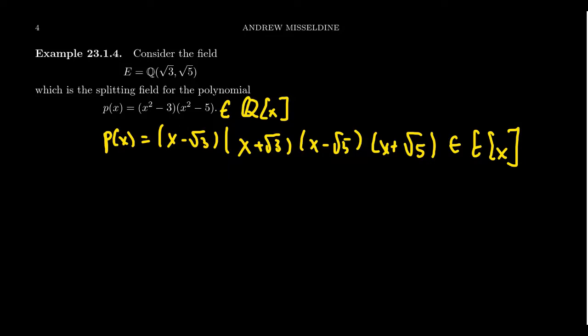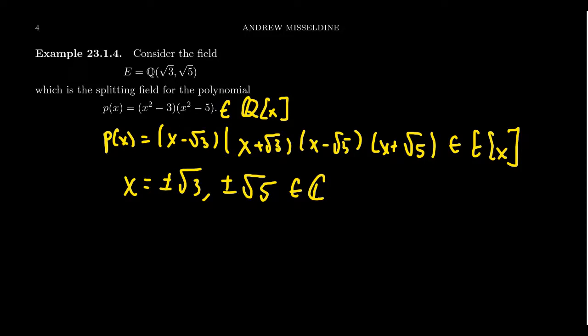We get four possible roots: plus or minus √3 and plus or minus √5. If you view these as complex numbers, the complex field is algebraically closed by the Fundamental Theorem of Algebra, so every rational polynomial will split inside C. This polynomial P has four roots: √3, -√3, √5, and -√5.